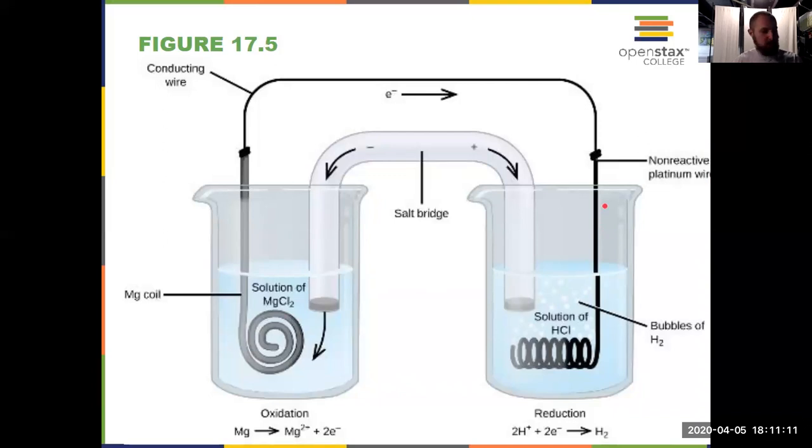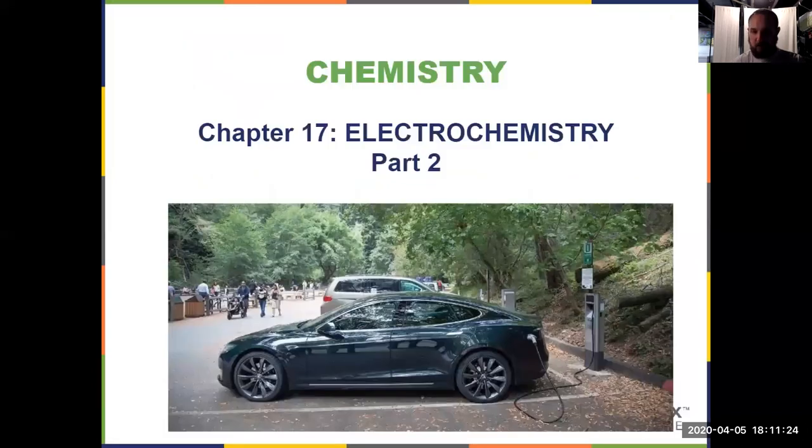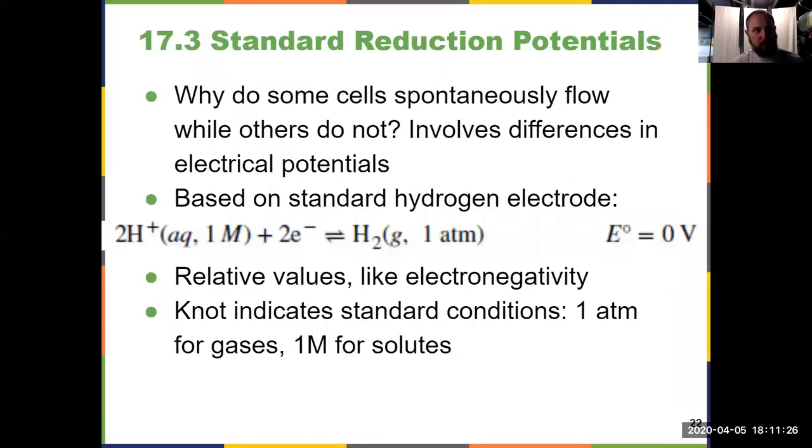So to summarize this first video from chapter 17, lots of vocab from the beginning, and then know every part of these diagrams and how to properly write a cell notation. On our next video, we'll pick up with calculating standard reduction potentials, which builds on these ideas.